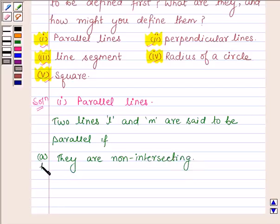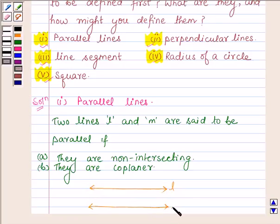And second, they are coplanar. That is, we have two lines L and M which are non-intersecting. Both lines L and M which are non-intersecting and are coplanar. Both lines L and M lie on the same plane and they do not intersect, so we can say that L is parallel to M.